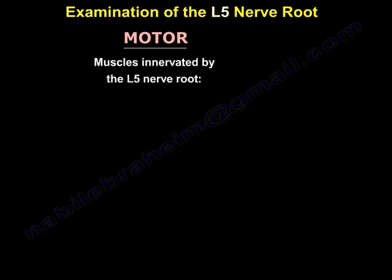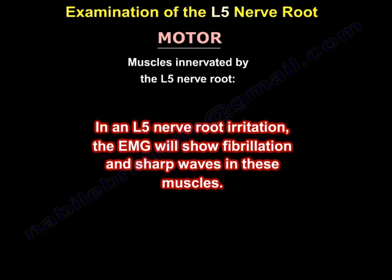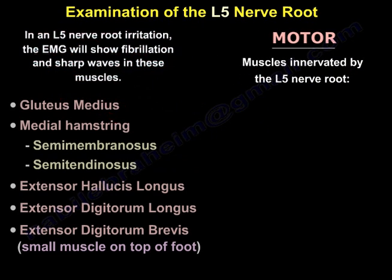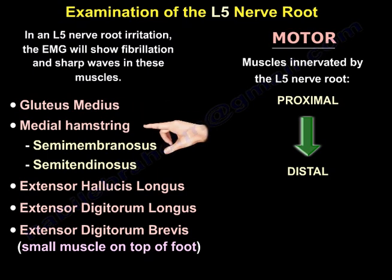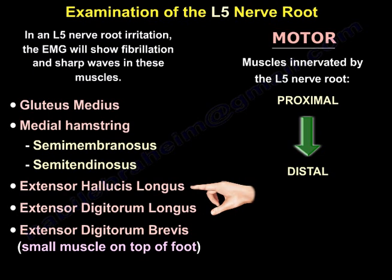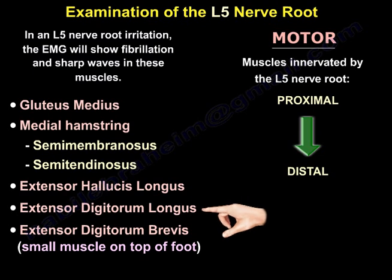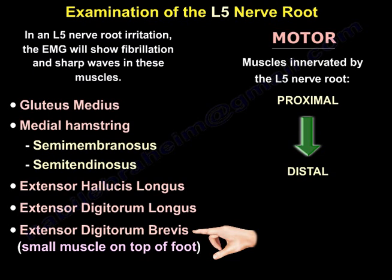In an L5 nerve root irritation, the EMG will show fibrillation and sharp waves in these muscles from proximal to distal: in the gluteus medius, the medial hamstring, the extensor hallucis longus, the extensor digitorum longus, and the extensor digitorum brevis.